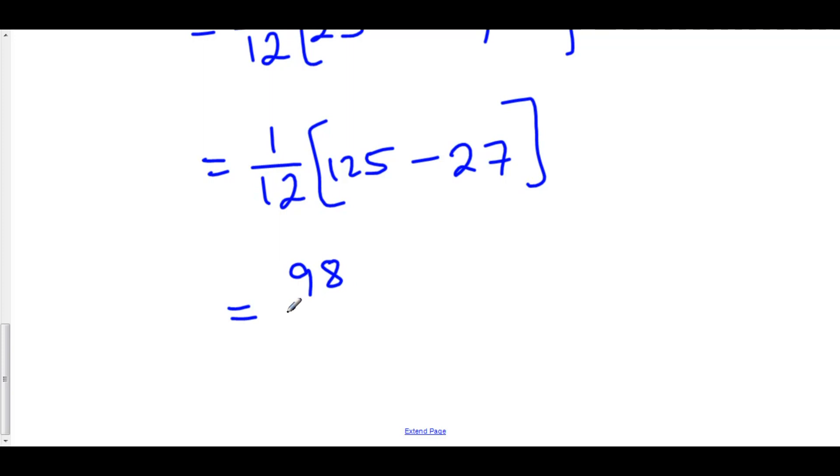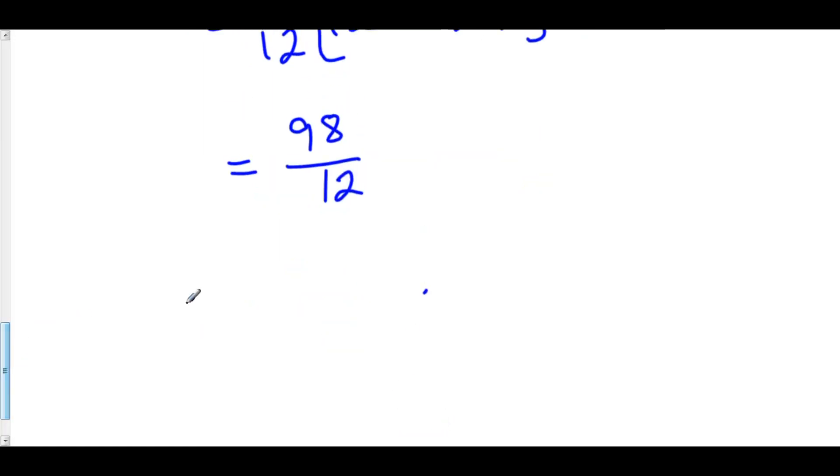125 minus 27 is 98. So, this is 98 over 12. Which reduces down to 46 over 6. Or, in terms of decimals, sorry 49 over 6. And, in decimals, that's 8.167 approximately. And, so here is the integral.